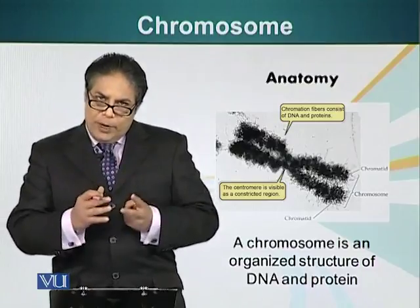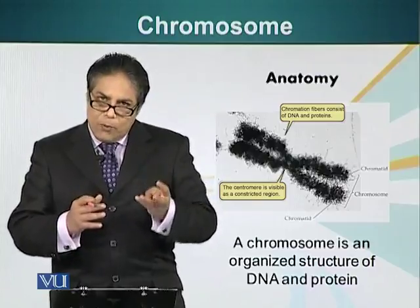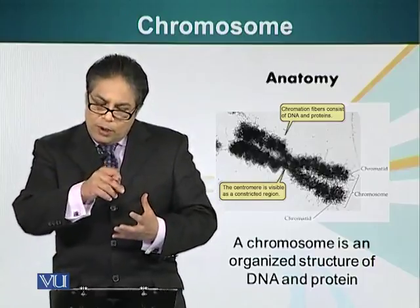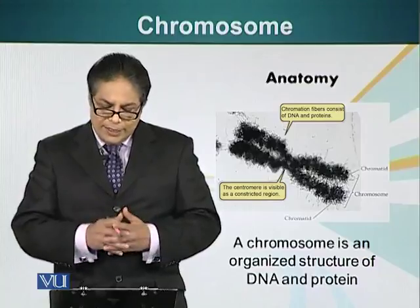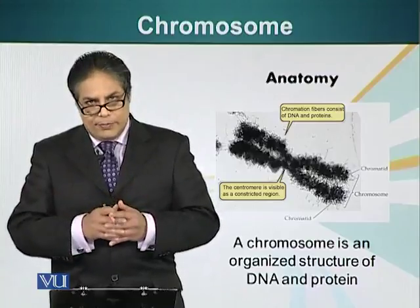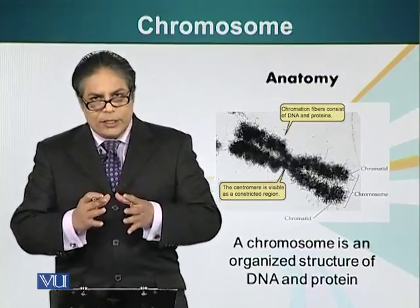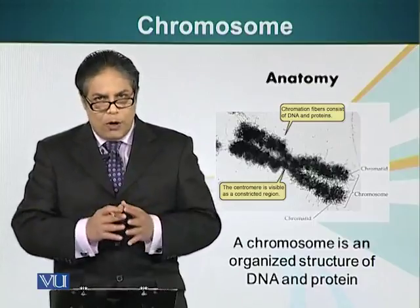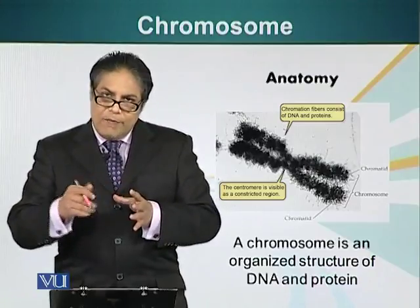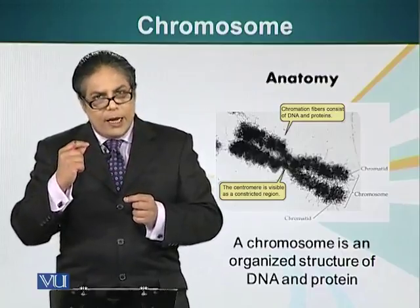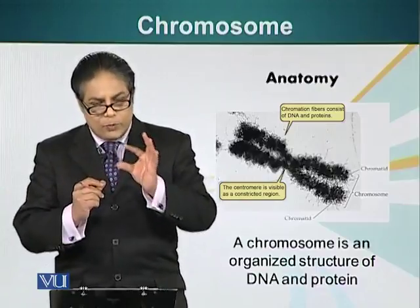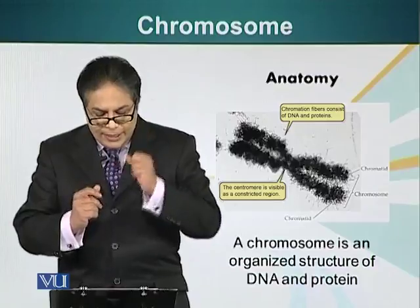A chromosome basically has two components: DNA, the genetic information, and protein that serves as a scaffold around which DNA is wound. The length of DNA in our cells is about 2 meters, and the size of the nucleus is 500,000 times smaller. So in order to fit such a long DNA into such a small space, we have to wind it around — just like you can wind thread around a spool, and even though the thread is very long, winding it around a spool makes it a condensed structure.